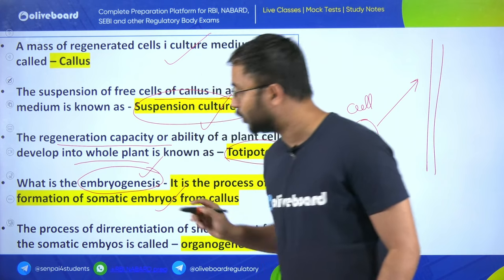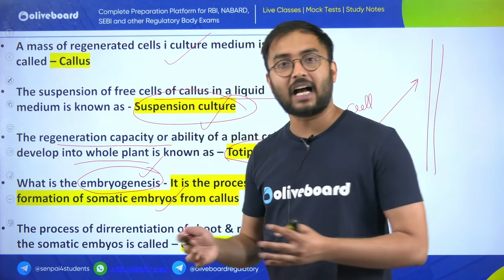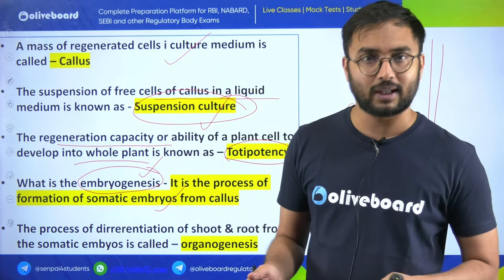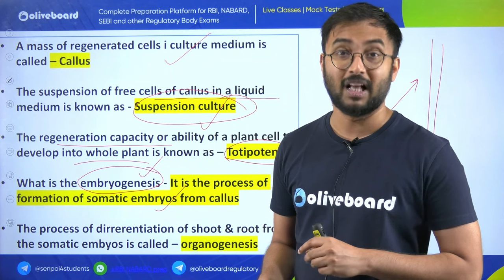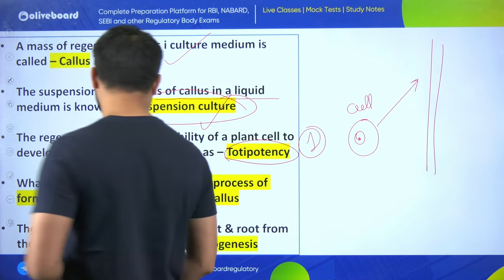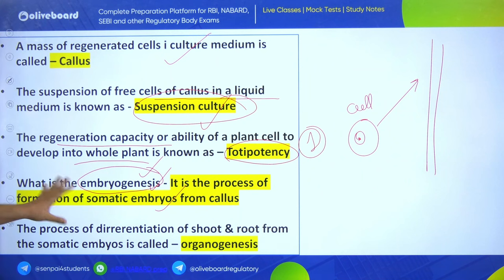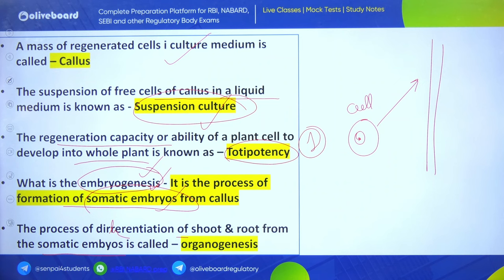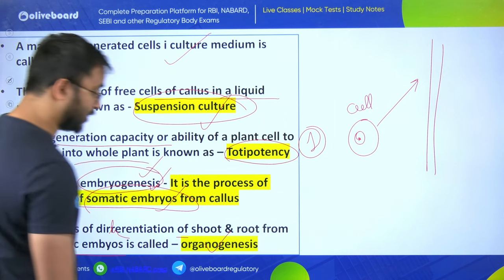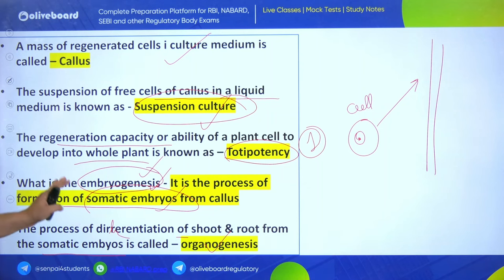Embryogenesis is a very important term. AFO and NABARD love such terms - they can give you the definition and ask which term it refers to. Embryogenesis is the process of formation of somatic embryos from the callus. The process of differentiation of shoot and root from somatic embryos is called organogenesis. Remember both embryogenesis and organogenesis along with their definitions.